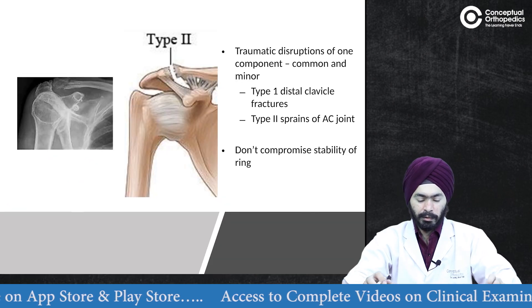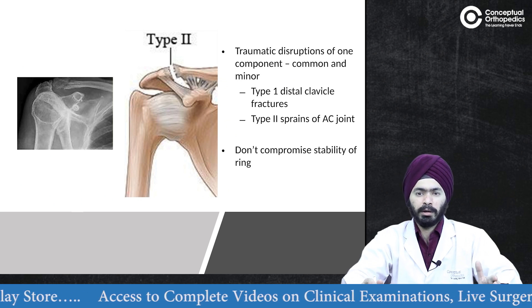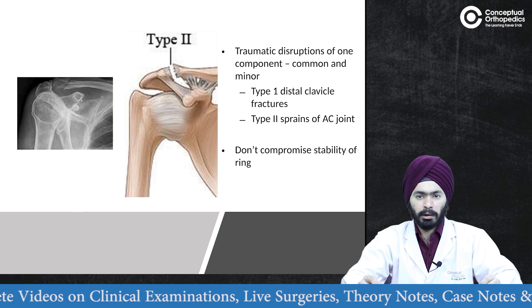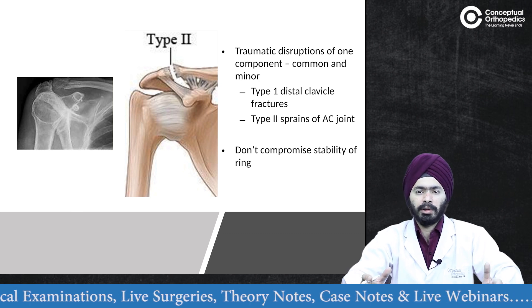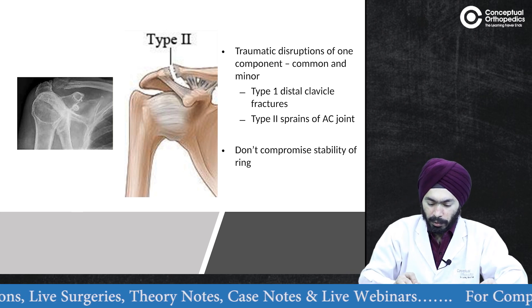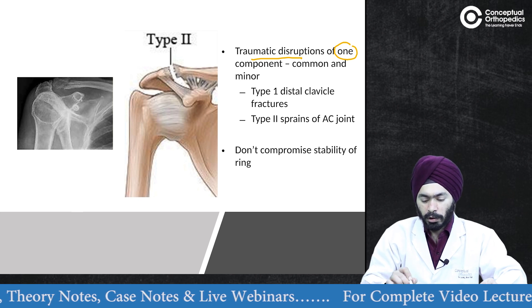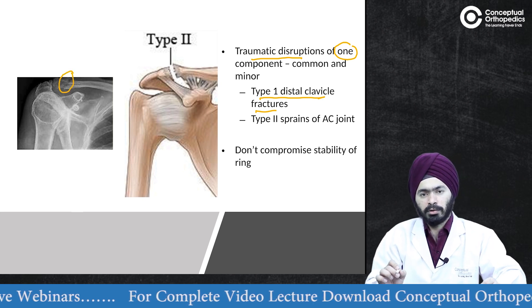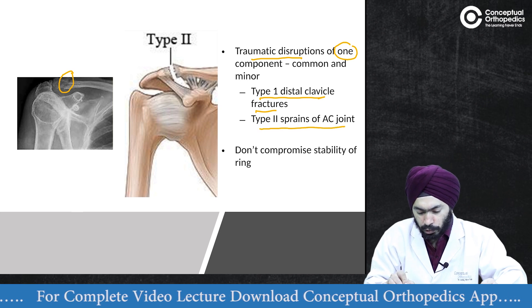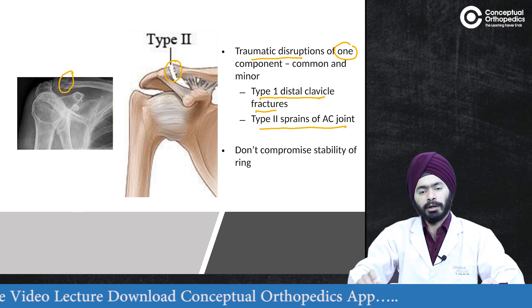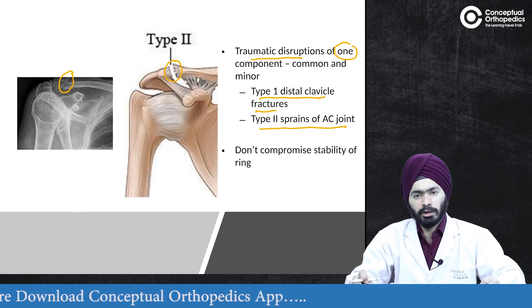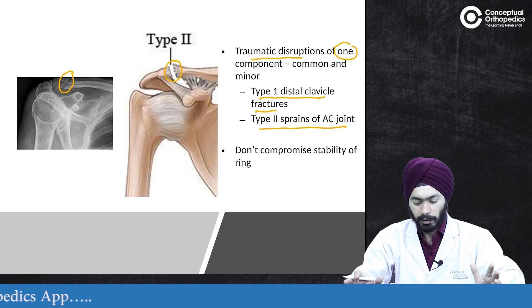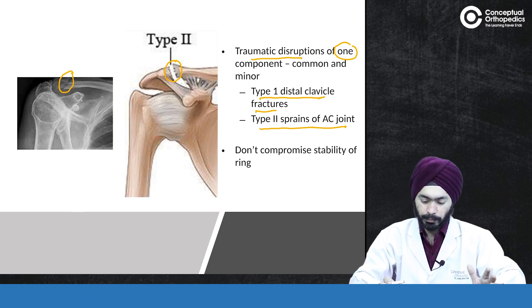When there is injury to a part of the SSSC, an isolated injury to any one part is very common and actually minor. Traumatic disruption of only one component — such as type 1 distal clavicle fractures or an isolated type 2 acromioclavicular joint sprain — does not compromise the stability of the ring.